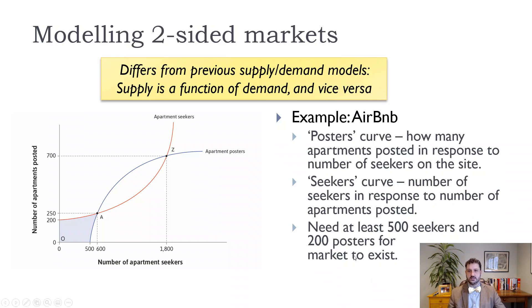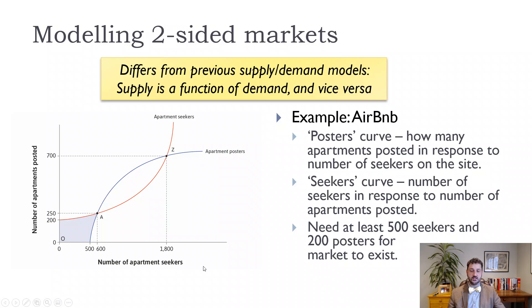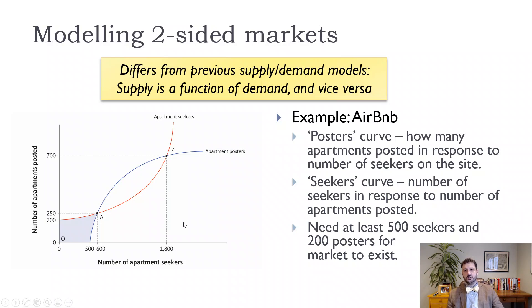The way we're going to model this is with a posters curve and a seekers curve. In our Airbnb example, we have the number of apartment seekers on the horizontal axis and the number of apartments posted on the vertical axis. We have an apartment seekers curve that is increasing with the number of apartments posted, and an apartment posters curve that is increasing with the number of apartment seekers. Both curves are concave, because there are only so many people looking to rent and only so many apartments available for rent.